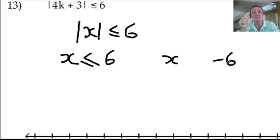If it's less than 6, it's going to be greater than negative 6. So greater than or equal to. That's the basics of you doing these absolute value inequalities.